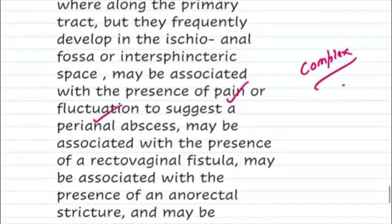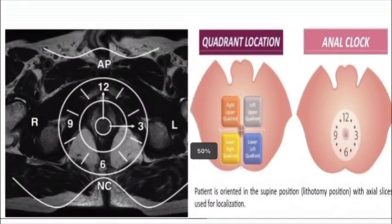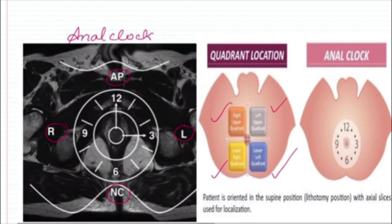The openings of the anal fistula are described using the anal clock format. Anterior is 12 o'clock, posterior is 6 o'clock, left side is 3 o'clock, and right side is 9 o'clock. It can also be given as a coordinate — right upper quadrant, left upper quadrant, right lower quadrant, and left lower quadrant — however the anal clock is more preferred. We have to describe both the external opening and the internal opening in terms of clock position.